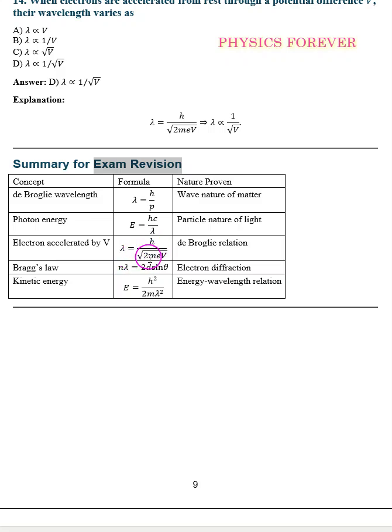Then lambda is equal to h by root of 2meV. This is de Broglie relation. This is the most important repeated question.